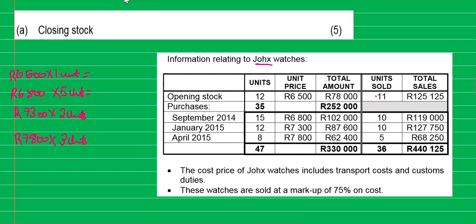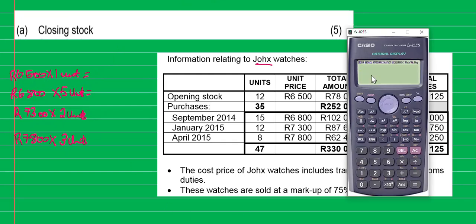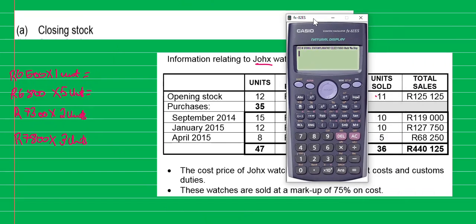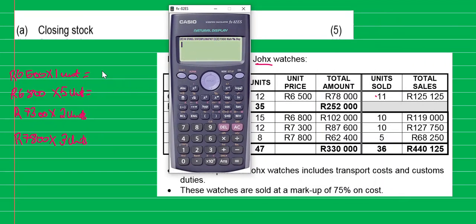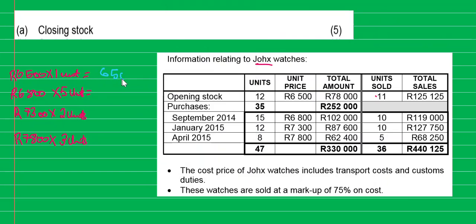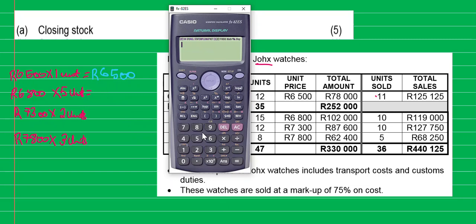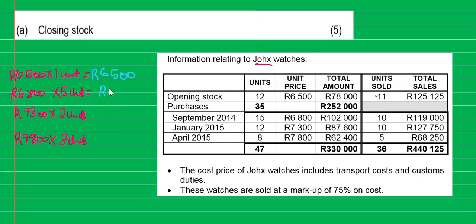Let's take our calculator and work through these unit costs. The first one is just 6,000 — no need to calculate that. Then we have 6,800 multiplied by five, which gives us 34,000.